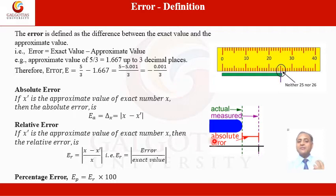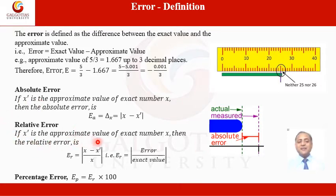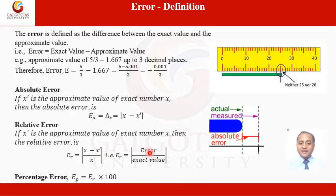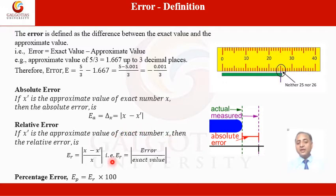Error can be negative or positive, but absolute error is always considered as a positive value. The next term is relative error. If x' is the approximate value of the exact value x, then the relative error is the modulus of error divided by the exact value, which is always positive. When we multiply the relative error by 100, it is called percentage error.